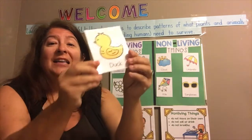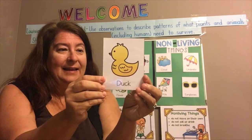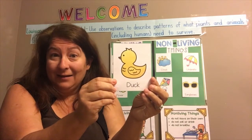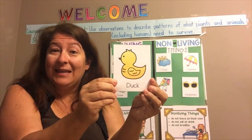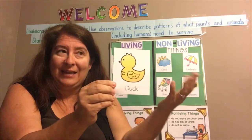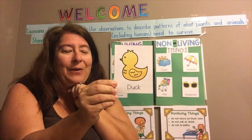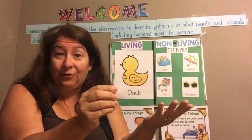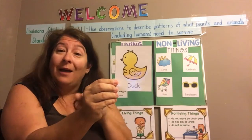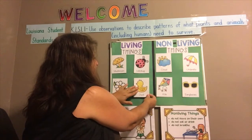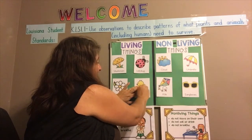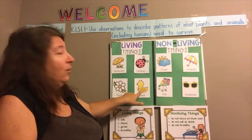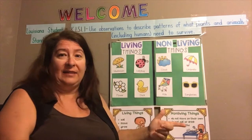My last picture is a duck. I know that a duck is a kind of bird. Birds fly, and they hatch from eggs and then grow until they become an adult bird. I also know that they need water to drink and food to grow and change. So by those observations, I'm going to put the duck on the side by the living things. Now we have four living things and four non-living things.